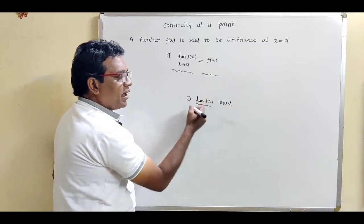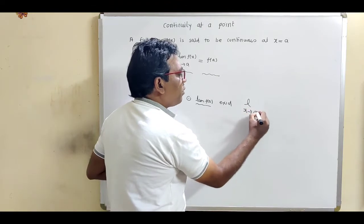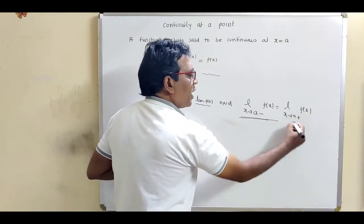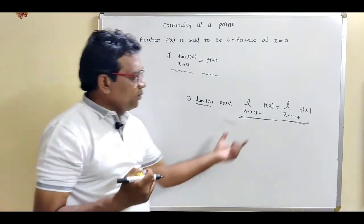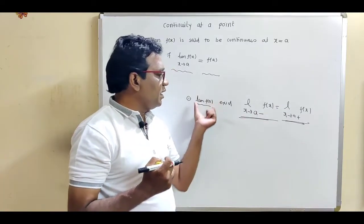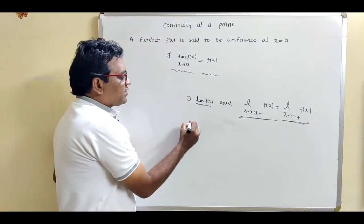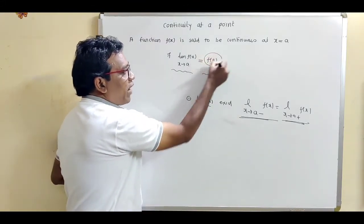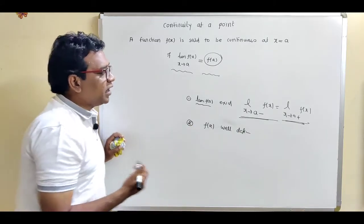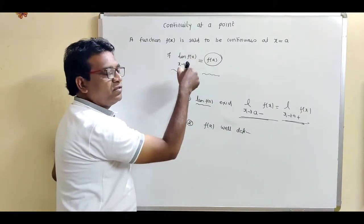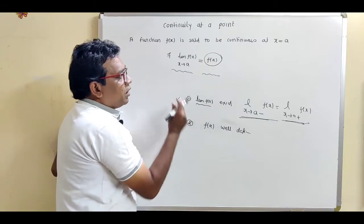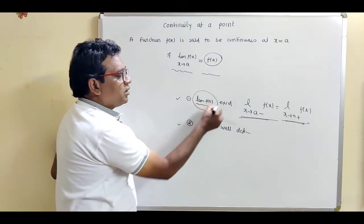The limit of function exists means the limit from left equals the limit from right, and this has a finite value — then we say the limit of function exists. The second prior condition is that the value of the function should be well defined. If the value of the function is undefined, we cannot compare it with the limit, so the function is again discontinuous.